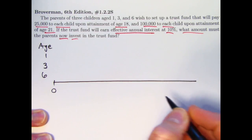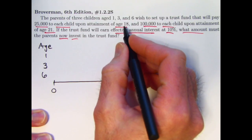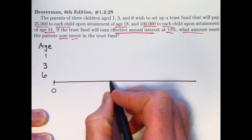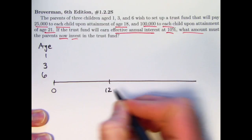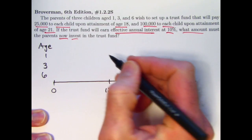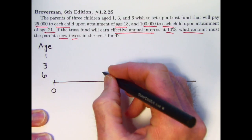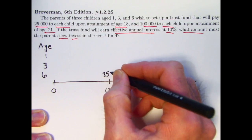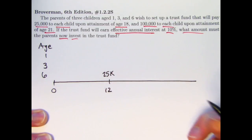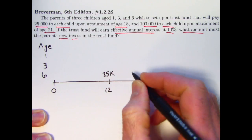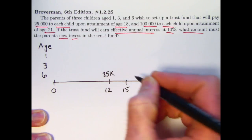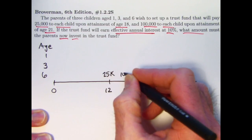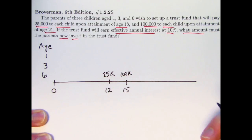Let's focus first on the six-year-old. The six-year-old will reach age 18 in 12 years. So let's go ahead and mark a 12 on here. When they reach 18, there's a $25,000 payment that we'll give to them. I'll just put a 25K there for $25,000. And then three years later, when they reach the age of 21, we will give them $100,000. So that's the payments to the six-year-old.